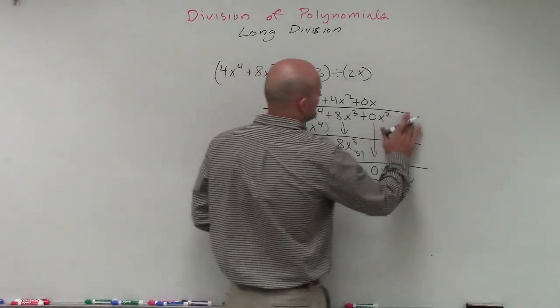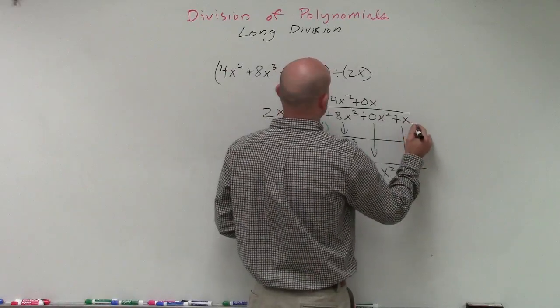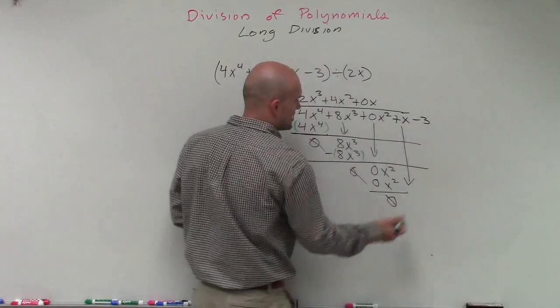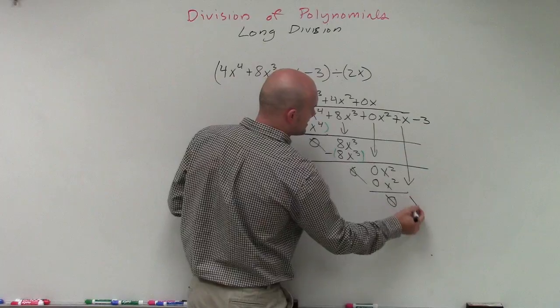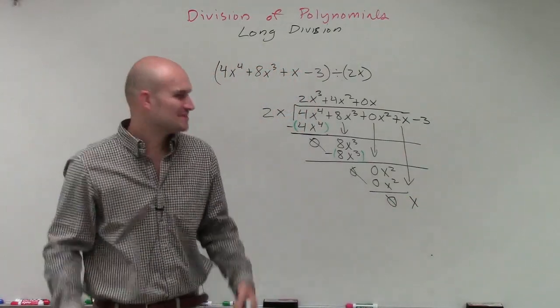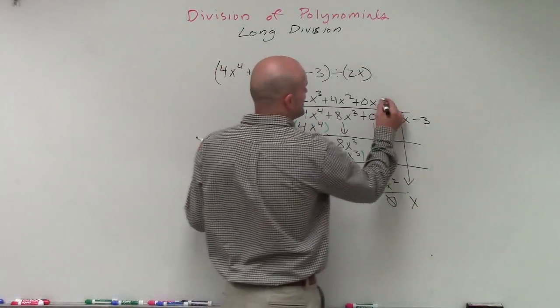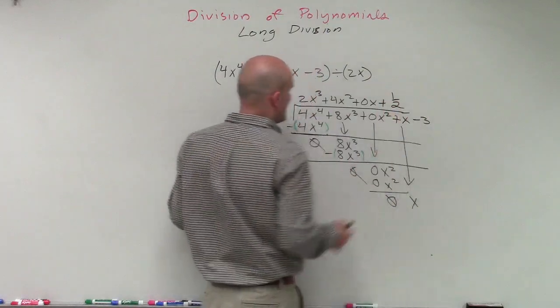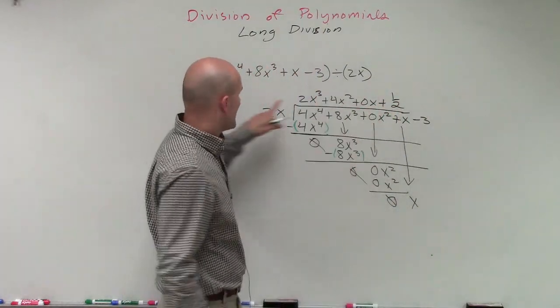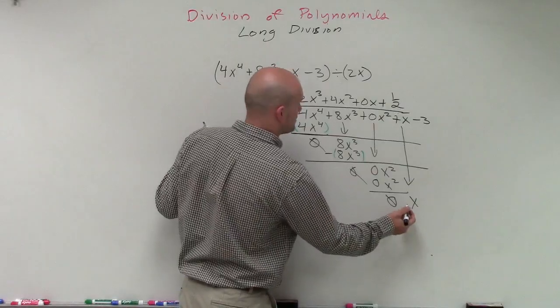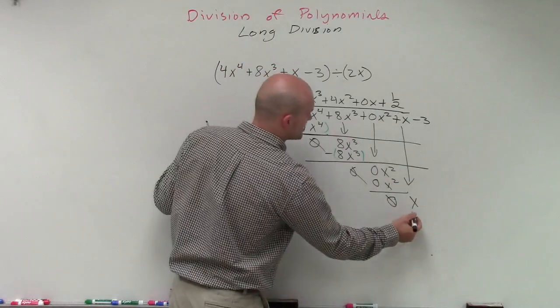0x squared. I forgot. I didn't write down the whole answer. Plus x minus 3. Sorry. So I'm going to bring down the x term, which is an x. I thought I wrote something down wrong with the problem. So 2x divides into x a positive 1 half times. And then 1 half times 2x is going to equal x.